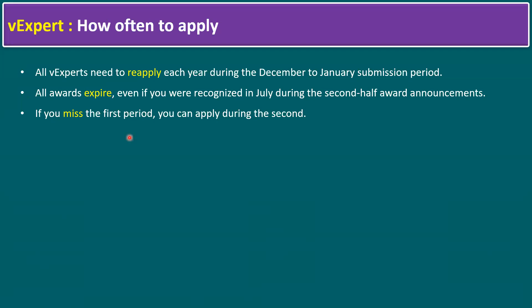All vExperts need to reapply each year during the December to January submission period. All awards expire, even if you were recognized in July during the second-half award announcement. If you miss the first period, you can apply during the second half from June to July.